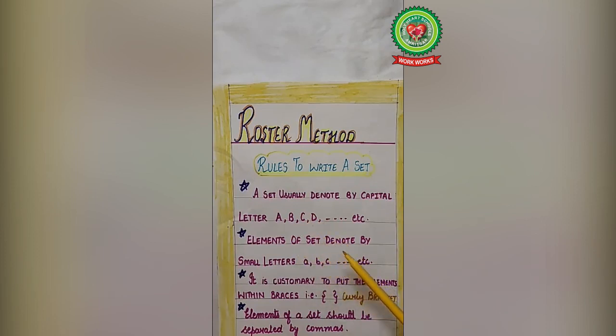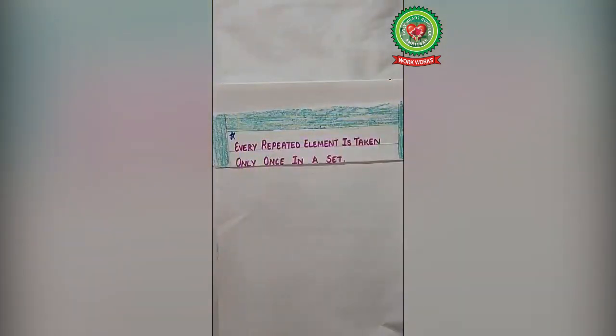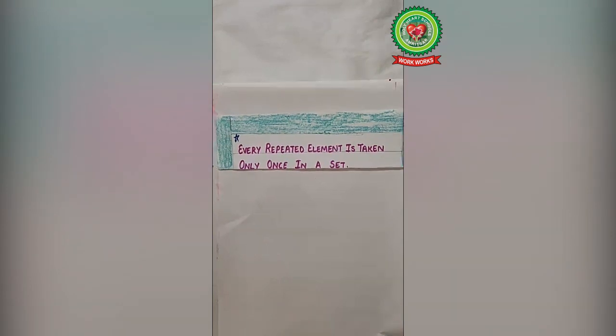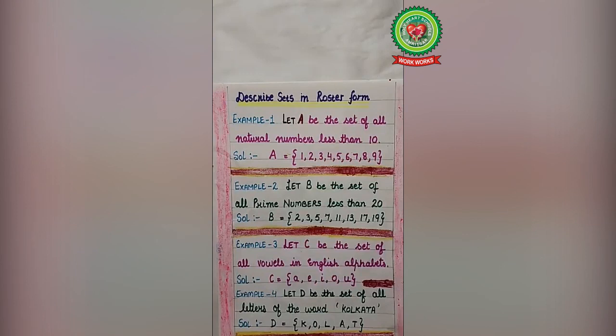Elements of set denoted by small letters: small a, small b, small c, so on. It is customary to put all the elements in curly bracket, and those elements of set should be separated by commas. And the last one is every repeated element is taken only once in a set. That is, there should be no repetition of any element.